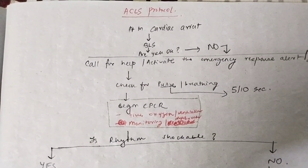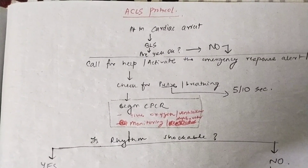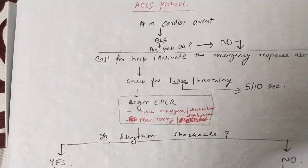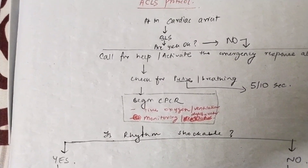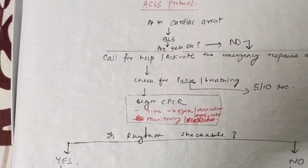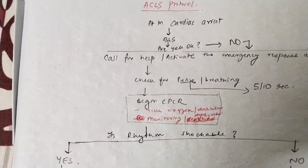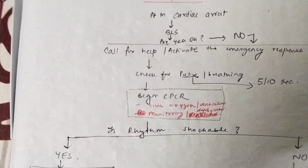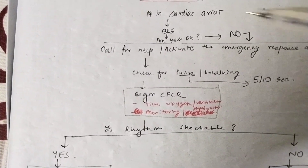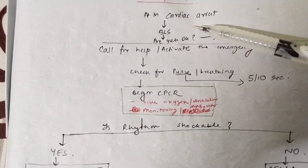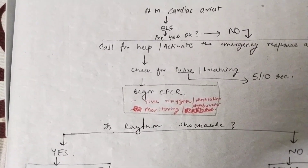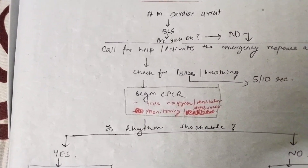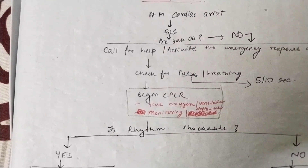The ACLS protocol — ACLS stands for Advanced Cardiac Life Support. When you see a patient in cardiac arrest, first you do BLS because you may not have equipment or a hospital setting. You ask the patient: are you okay? If the patient is not responsive, you start the ACLS protocol.